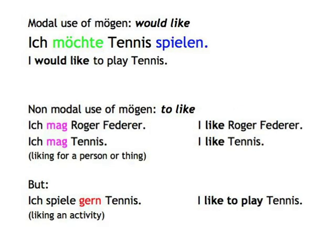By the way, if you want to express a fondness for an activity as opposed to a thing or person, you use the little word gern and simply add it to the verb. To summarize: Ich möchte Tennis spielen (I would like to play tennis) — this is the modal verb use of mögen. In contrast, the non-modal uses are: Ich mag Roger Federer (I like Roger Federer), Ich mag Tennis (I like tennis), and Ich spiele gern Tennis (I like to play tennis) to express that you like an activity.